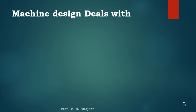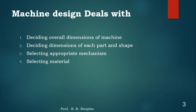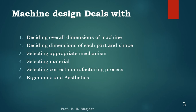Machine design deals with a few key points: deciding the overall dimensions of the machine, deciding the dimension of each part and its shape, selecting the appropriate mechanism, selecting the material, selecting the correct manufacturing process, and lastly ergonomics and aesthetics. These are the few points which we have to consider while designing.